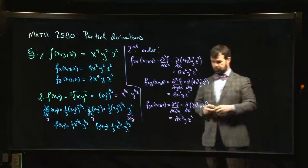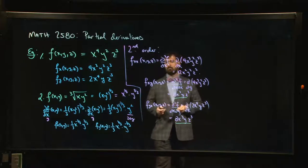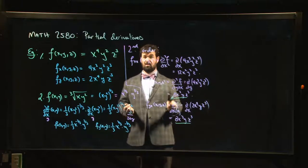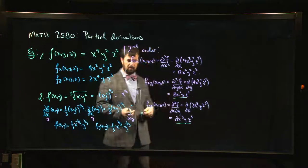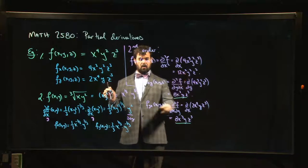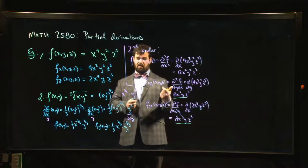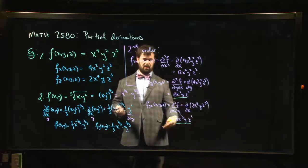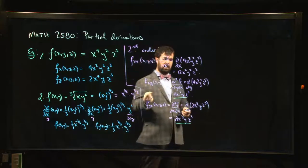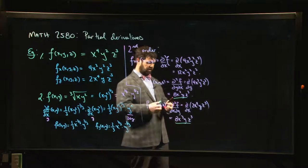Those two answers are the same, and this is not a coincidence. There's a theorem — named after Clairaut, a French mathematician — which tells you that the order doesn't matter under certain conditions. It turns out that for a suitably well-behaved function, the only thing that matters is how many derivatives you're taking with respect to each variable. So x,x,y and y,x,x are all the same — two x's and a y, regardless of order, always gives the same answer.